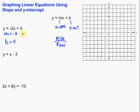Negative 2 as a fraction would be negative 2 over 1. If we want to rise negative 2, that means we go down 2. Rising is positive — positive is up, and negative would be down. When we're running, the positive direction is to the right, and negative is to the left. So we're going to rise negative 2, which means we go down 2, and then we're going to run 1 in the positive direction. That puts us right over here — there's our second point. We can make another point by doing the same thing.